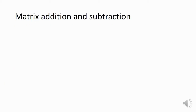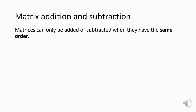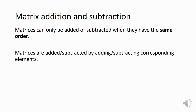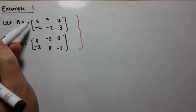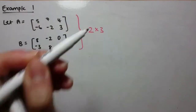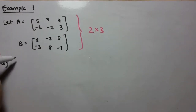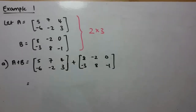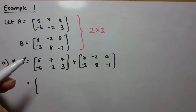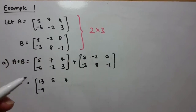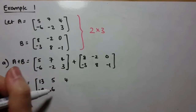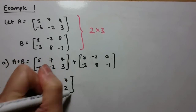For matrix addition and subtraction, it's really straightforward. It's important that matrices have the same order so there are corresponding elements to add. For this example, both matrices have two rows and three columns, making them 2×3 matrices, so we can add them. We get: 5+8=13, 7+(-2)=5, 4+0=4, (-6)+(-3)=-9, (-2)+8=6, and 3+(-1)=2. For subtraction we subtract corresponding elements: 5-8=-3, 7-(-2)=9, 4-0=4, (-6)-(-3)=-3, (-2)-8=-10, and 3-(-1)=4.